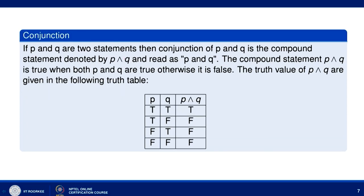Conjunction: if P and Q are two statements, the conjunction of P and Q is the compound statement denoted by P and Q. The compound statement P and Q is true only when both P and Q are true; otherwise it is false. So from the truth table: when P is false and Q is false, P and Q is false; when P is false and Q is true, P and Q is false; when P is true and Q is false, P and Q is false; and when both are true, P and Q is true.